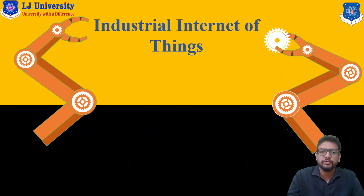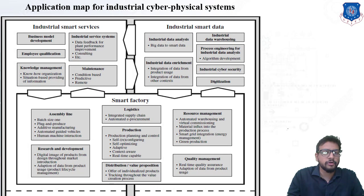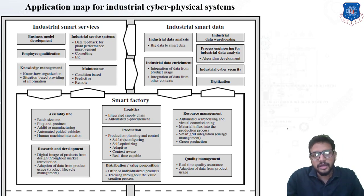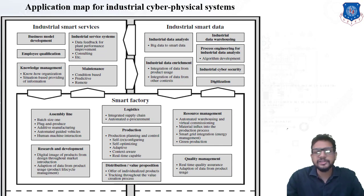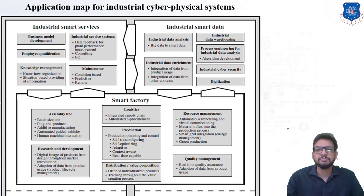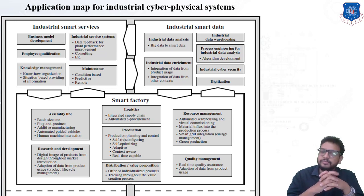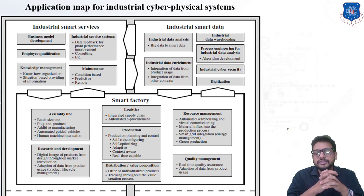The topic is application map for industrial cyber physical systems. The components of this are industrial smart services, industrial smart data, smart factory, and smart product.